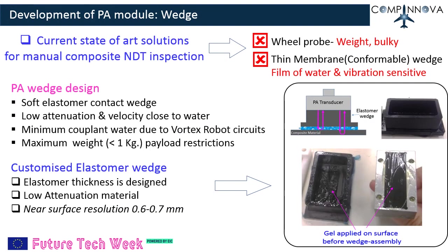Regarding further development of the PA module: the current state-of-art PA solutions for manual composite material inspection were not suitable for automation with the Vortex robot. The wheel probe is two to three kilos in weight and is bulky. Furthermore, thin membrane-based wedges require a film of water and are sensitive to vibration. Hence a decision was taken to customize a soft wedge of hydrophilic material.